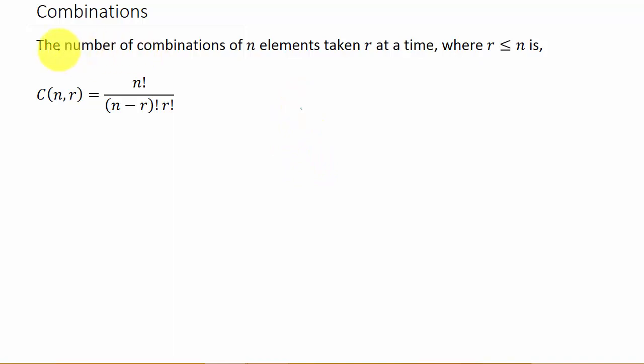But let's look at combinations. The number of combinations of N elements taken R at a time, where R is less than or equal to N, is N factorial over N minus R factorial times R factorial.